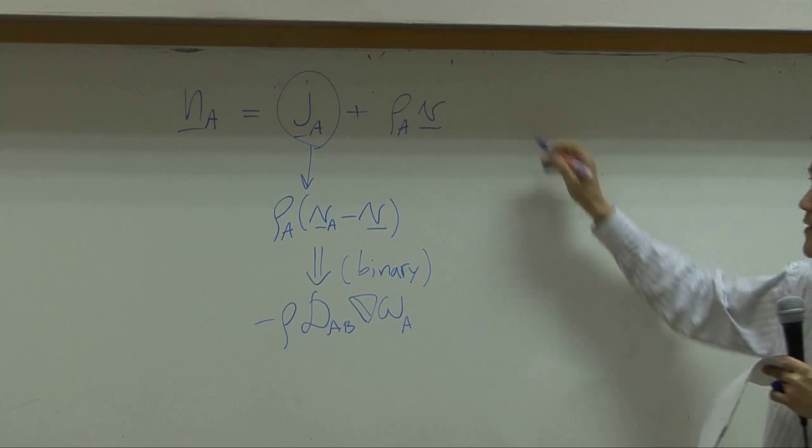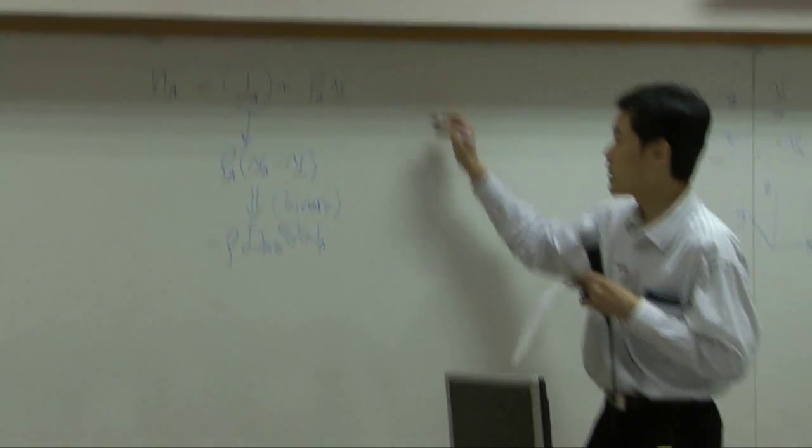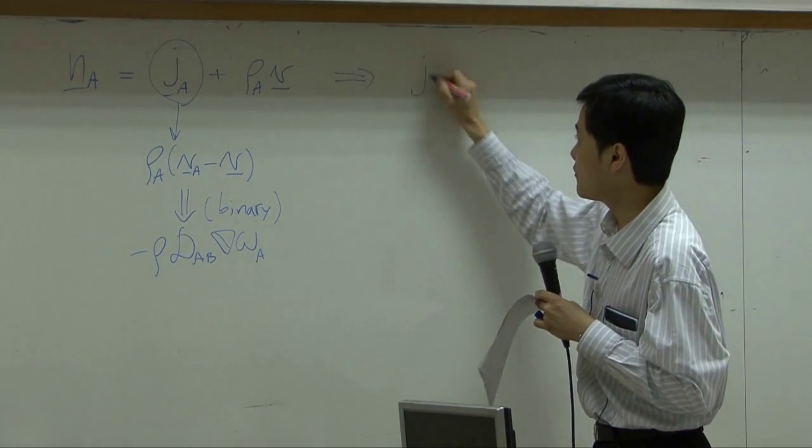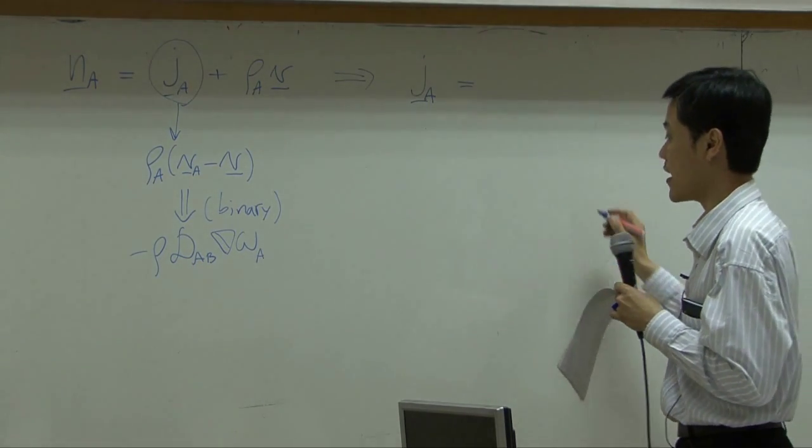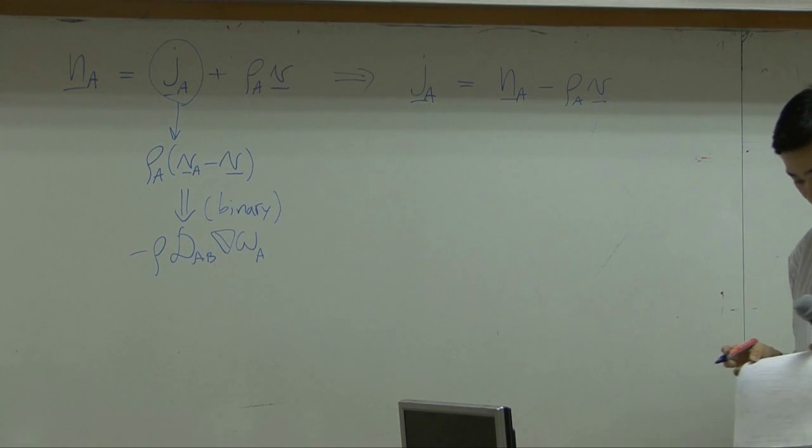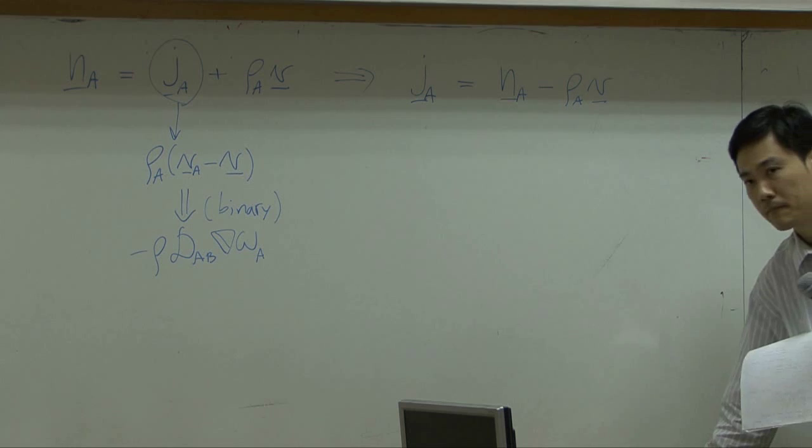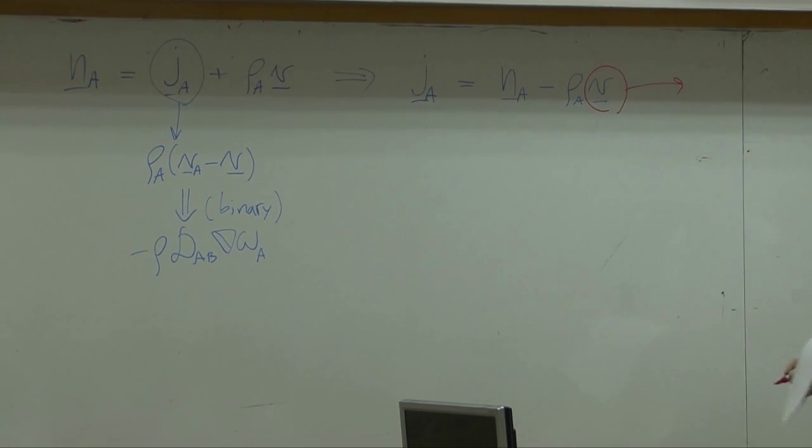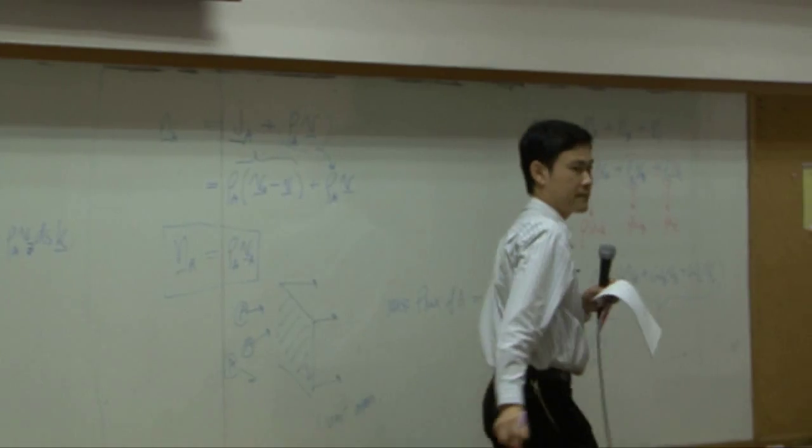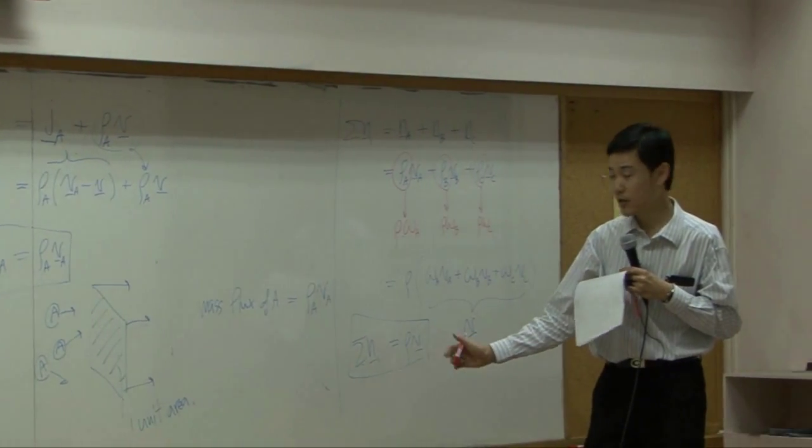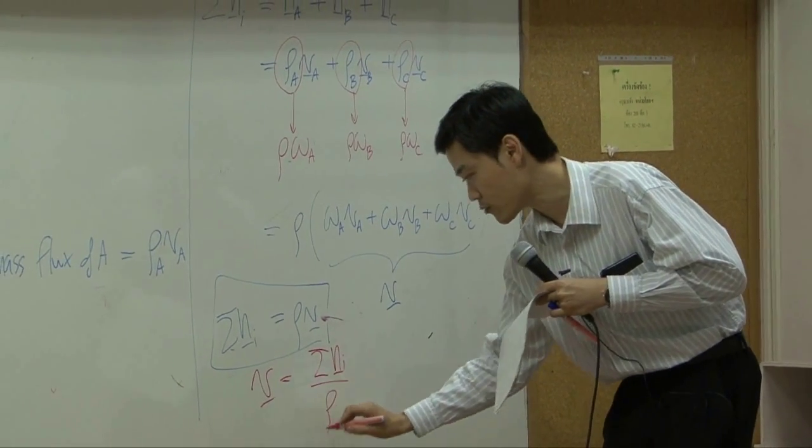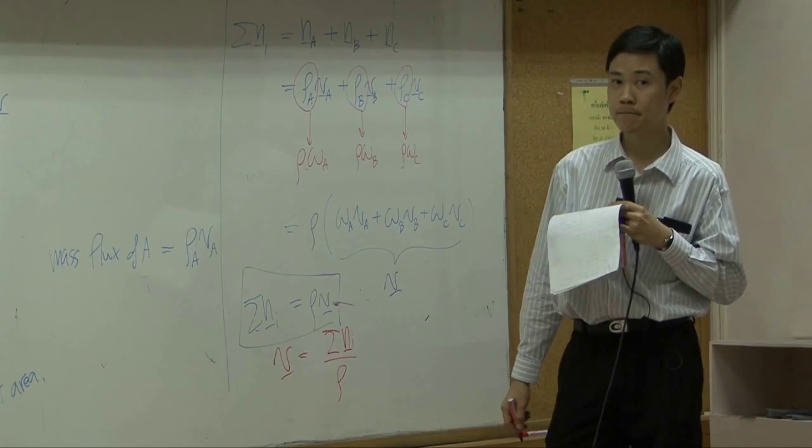As a summary, from this equation, if I rearrange the equation, you can get JA equal to NA subtracted by rho A, V. But V itself, according to this relationship, you can rearrange the equation so that V should equal to summation of NI divided by total concentration. From here.